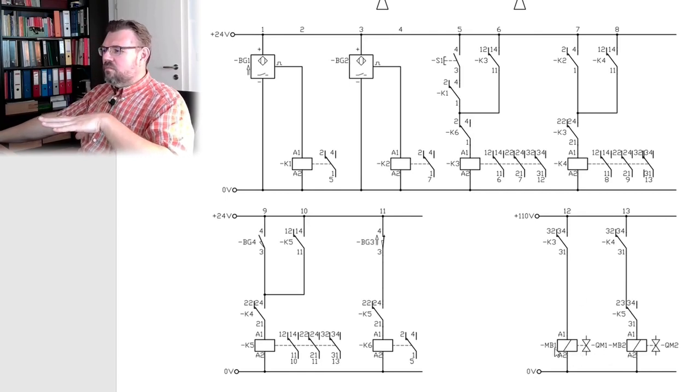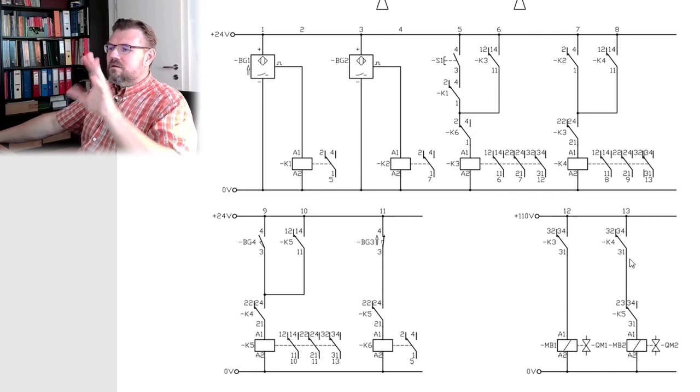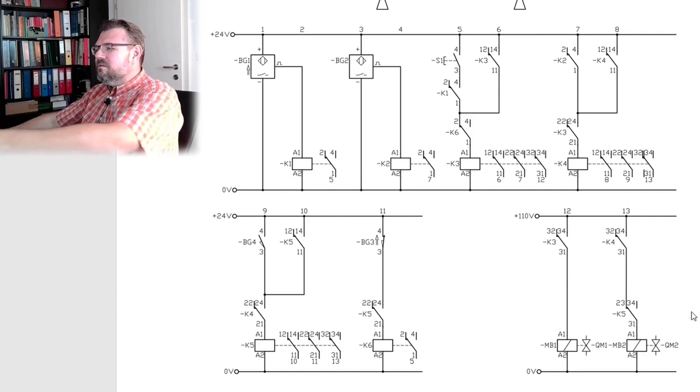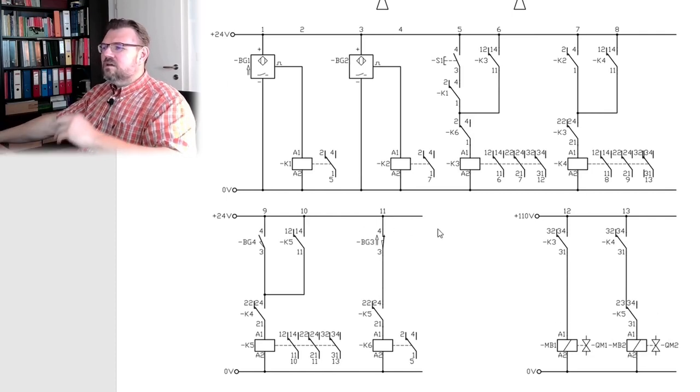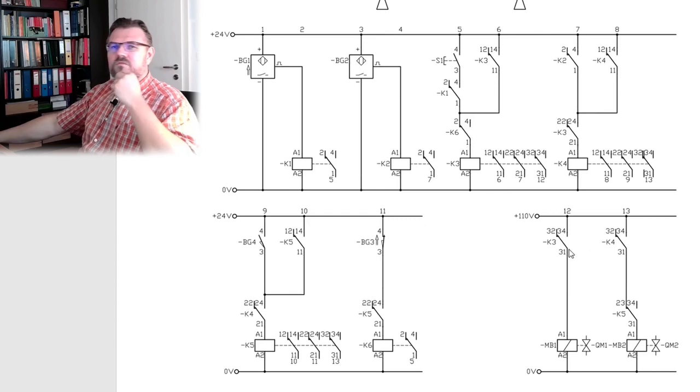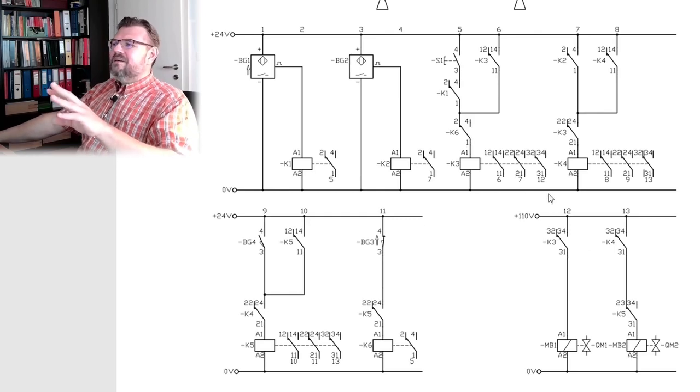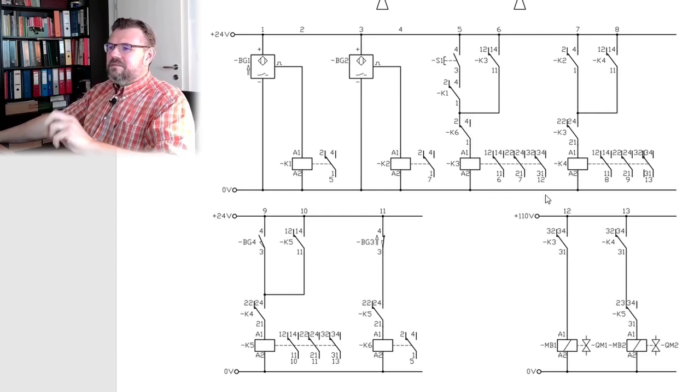And here we have a switch. We are switching these two coils. So here we have QM1, QM1, MB1, MB2 and QM2. So here we seem to switch, and this is the logic, separated logic and power control.